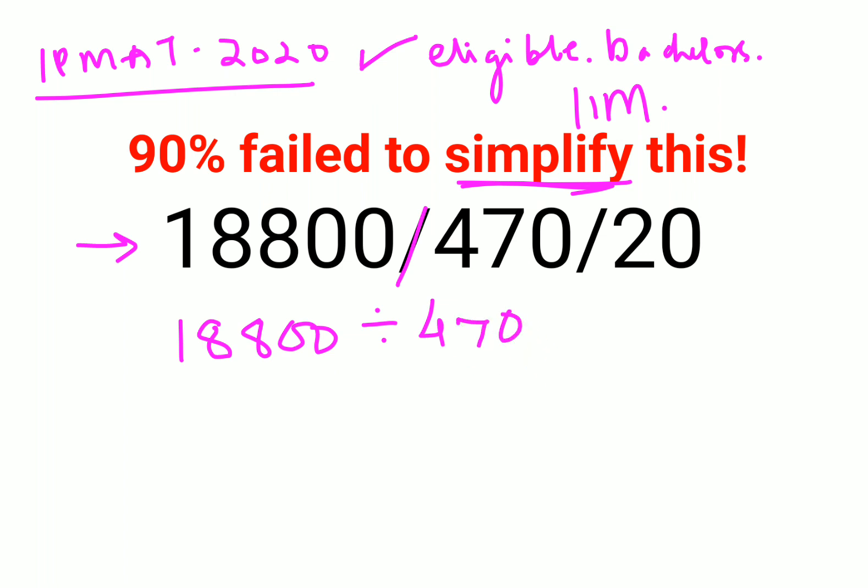This means division. That slash stands for division. Now understand, whenever there is division between two numbers, we will always follow the rule of KCF. K stands for keeping the first number as it is, C stands for changing the division sign to multiplication, and F stands for flipping.